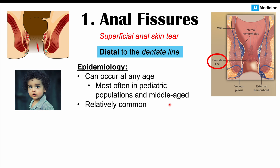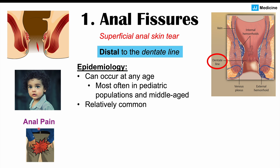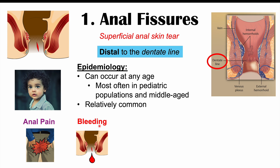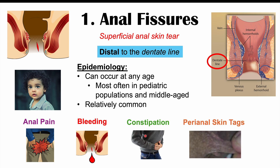The hallmark finding of anal fissures is anal pain, especially during and after defecation — a sharp and sometimes burning pain during defecation. We can also see some bleeding, often after defecation: blood on the toilet paper after wiping or in the toilet bowl. Constipation can be another finding — not caused directly by the fissures, but because the pain during defecation causes patients to avoid using the washroom, leading to constipation and bowel habit changes.